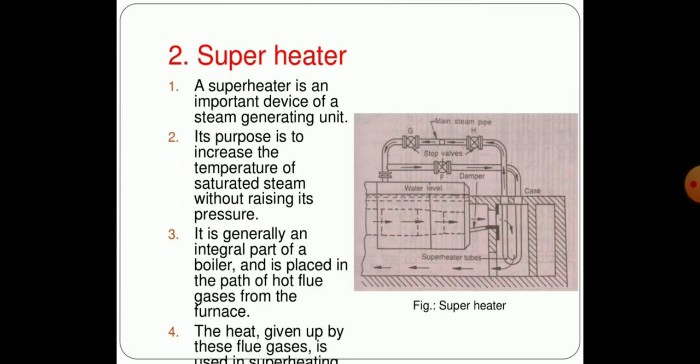The second part of the boiler accessory is the super heater. A super heater is an important device of the steam generating unit, and its purpose is to increase the temperature of saturated steam without raising its pressure. It is generally an integral part of the boiler and is placed in the path of hot flue gases from the furnace.